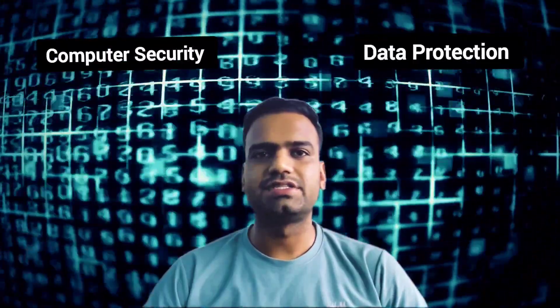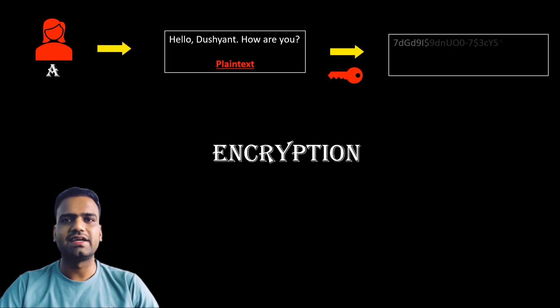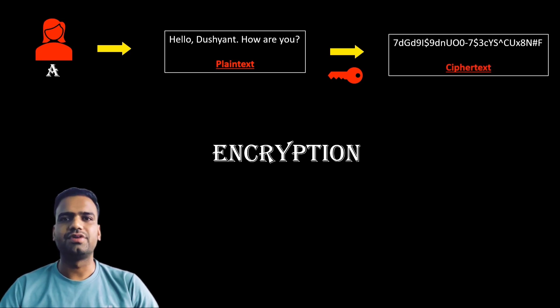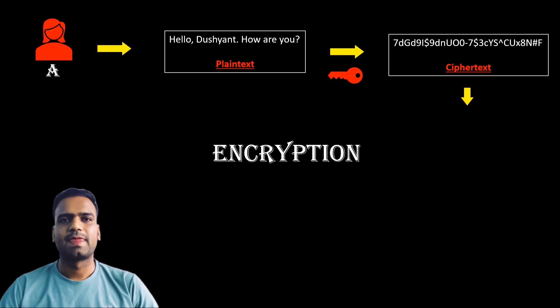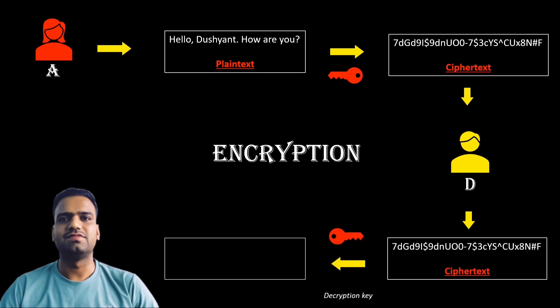Encryption is a fundamental technique used in computer security and data protection to ensure the confidentiality of information. It is a process of converting data or files into a format that is unreadable to anyone who doesn't have the proper decryption key. Encryption converts plain text into cipher text, which is like a secret language. It's impossible to understand cipher text without a proper decryption key. If a person has a decryption key, they can decrypt the file back to plain text.